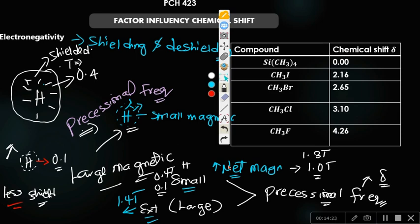Why? Because the external magnetic field will have a high influence, the net magnetic field will be high, the precessional frequency will be high, and so the chemical shift will be high. So what we are looking at are atoms that can remove the shielding electrons from around the nucleus to make it less shielded. That's what we are examining with electronegativity.